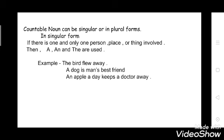Countable nouns can be singular or plural. If there is one and only one person, place, or thing, we use 'a' or 'the' before the noun. For example: 'The bird flew away' — here you are talking about a single bird. Another example: 'An apple a day keeps a doctor away' — here apple is in a singular form.